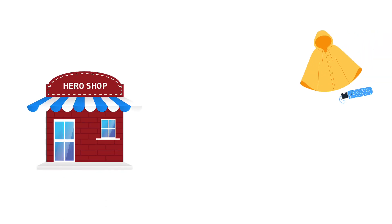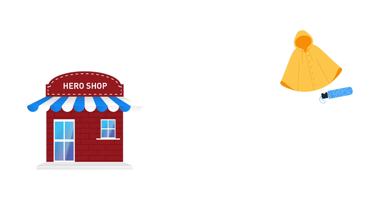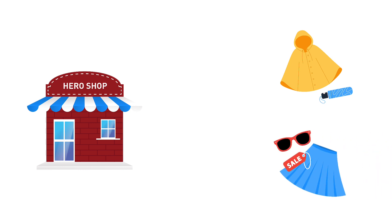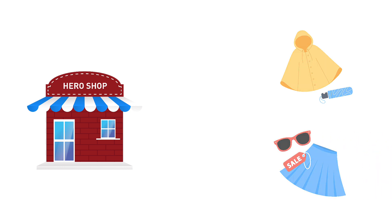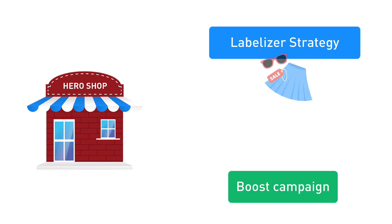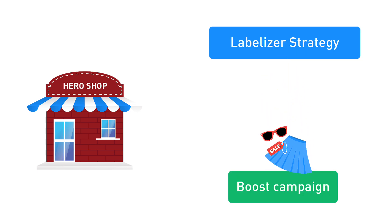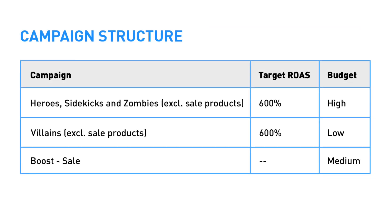For the merchant Hero Shop, summer is ending and the fall collection is already added to the assortment. The summer collection is on sale. Hero Shop decides to take the sale products out of the existing labelizer structure and put them in a new boost campaign. Hero Shop chose this campaign structure.